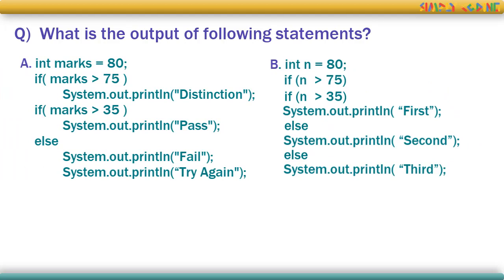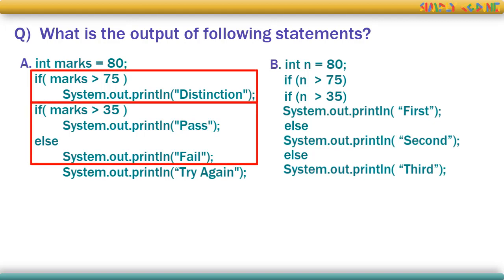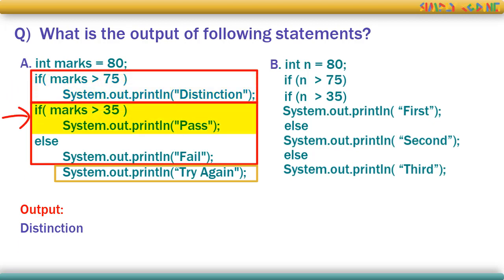Let's practice another one. Don't get fooled by indentation — identify the blocks carefully first. This is the first if-block. Then there is a second if-else block. The last statement is not part of any if-else block. Now executing in sequence: the first if-block is true, so it executes the println statement. Then the second if is also true, so it prints 'pass'.